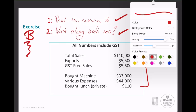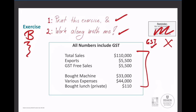We have some total sales here and all of these numbers are going to include GST, so we'll keep it nice and simple. Total sales of $110,000. We've got some exports here of $5,500 and GST free sales of $5,500. These numbers are part of this total sales figure. So we'll have sales that are local, some that are exports, some that are GST free, and some that are GSTtable. Our total sales including GST was $110,000.